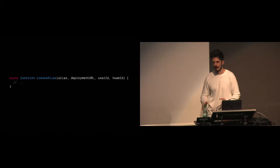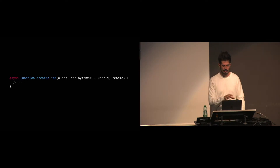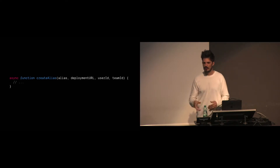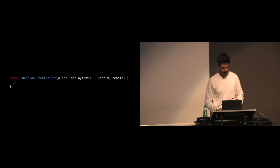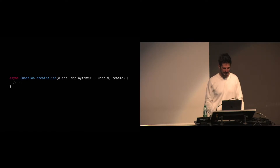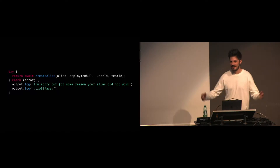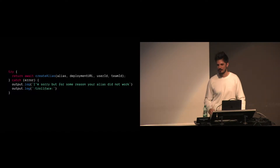In the end, what we provide at the code level is just a function that encapsulates all of this behavior. The contract of this function is that we receive an alias, a deployment URL, a user ID, and team ID, with credentials handled under the covers. So how can we handle all the errors that can happen here? The easy way — and the way many people usually do it — is to try-catch and say 'I'm sorry, but your alias didn't work.' But you don't know why. I don't think this is a very good solution.